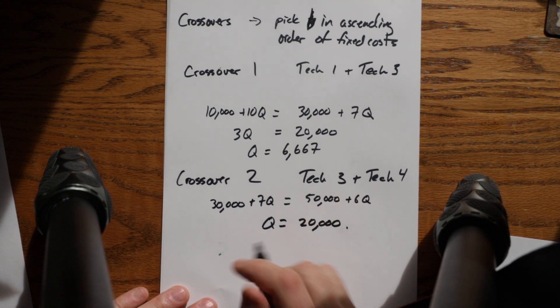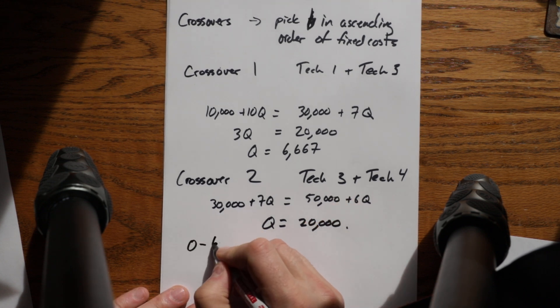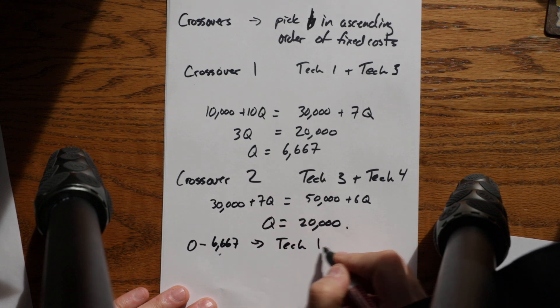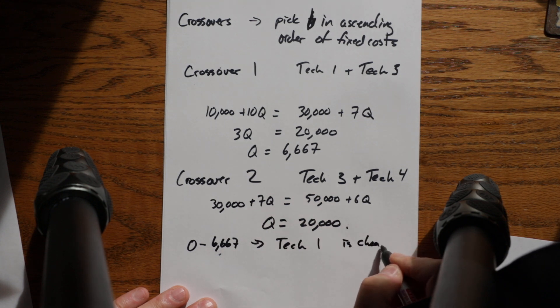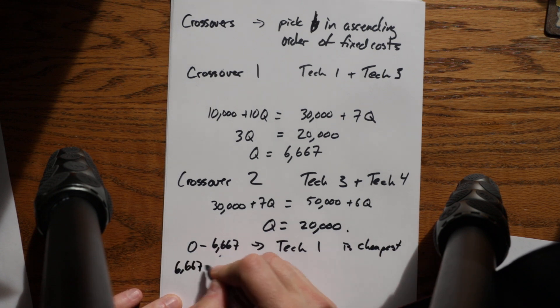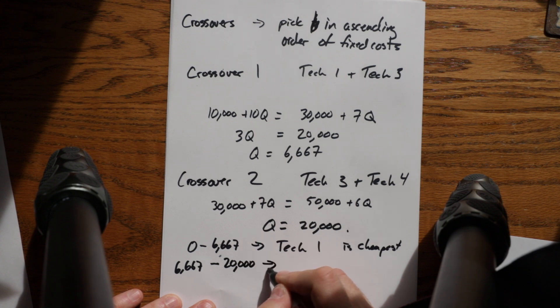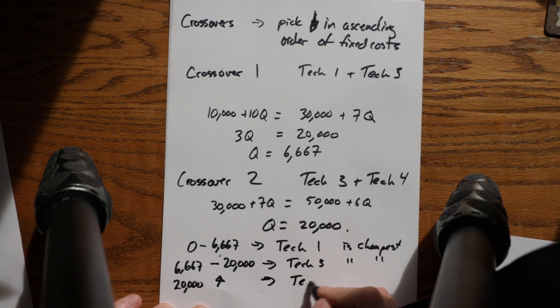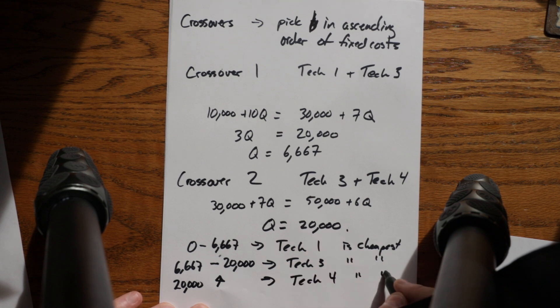So I can then say from zero to 6,667, technology one is cheapest. From 6,667 to 20,000, tech three is cheapest. And from 20,000 and higher, tech four is cheapest.